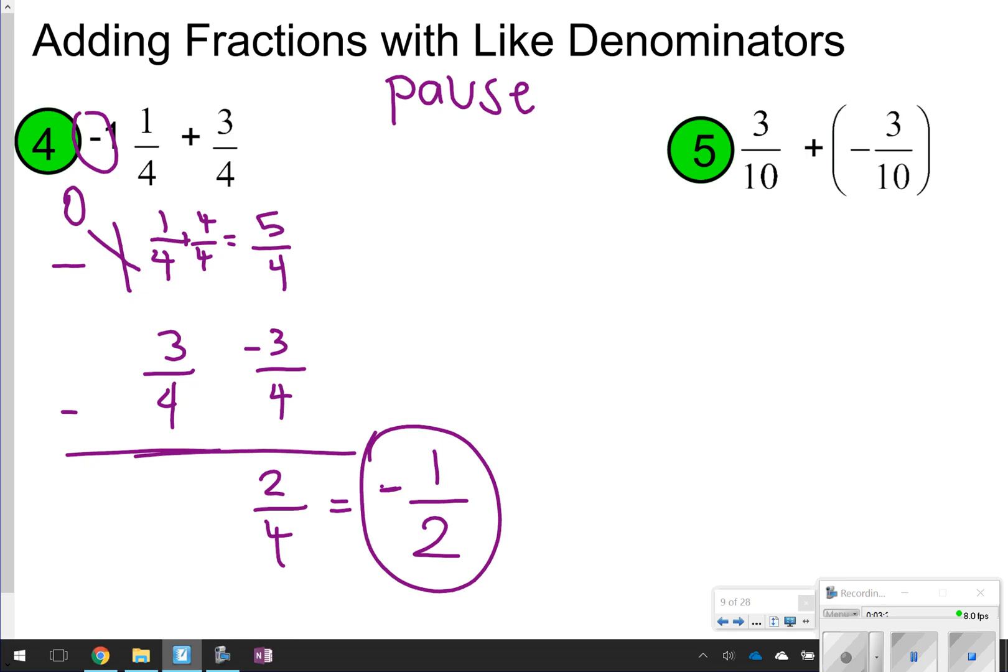Number five should have been pretty easy because, if you notice, these are additive inverses. Additive inverses, again, just mean that they're opposite numbers, and any time you're adding opposite numbers, your answer is always zero.